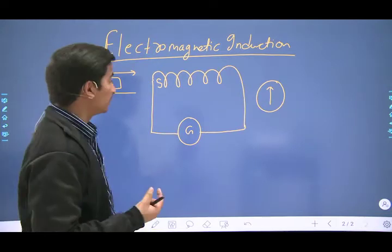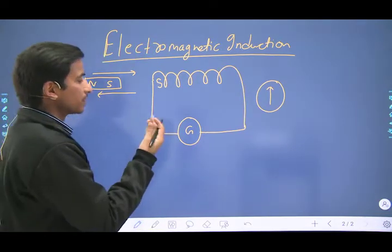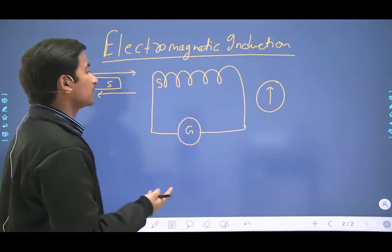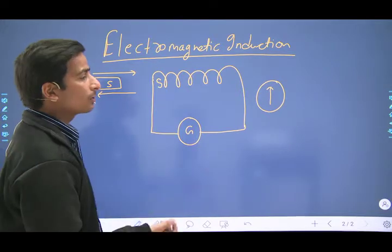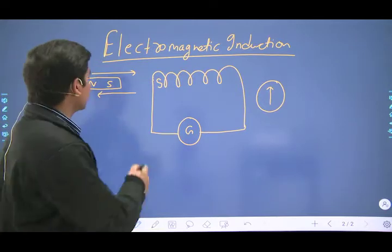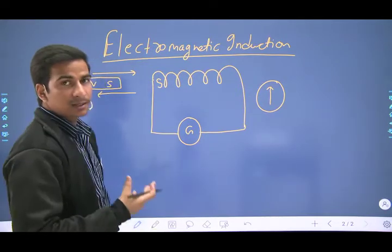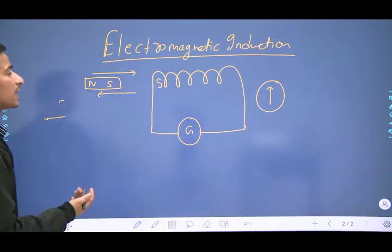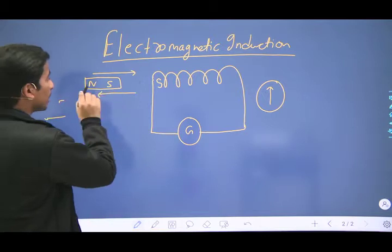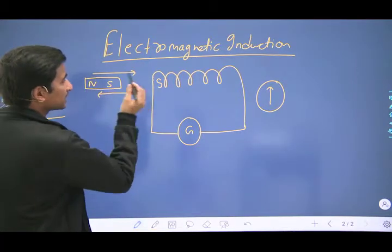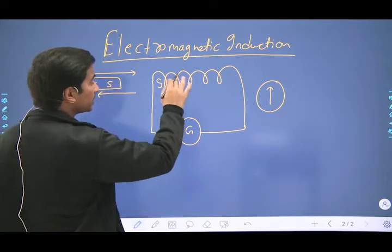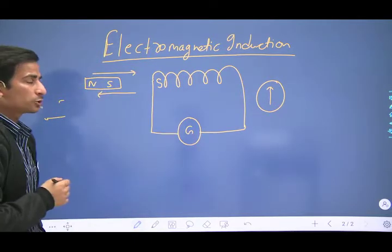That work is stored as potential energy or electrical energy inside the coil — exactly similar to dropping a stone from a height: gravity attracts it downward, but it cannot come up to a table without work done against gravity. Energy system ke andar tab store hoti hai jab hum kuch aisa karte hain jo system nahi chahata. Electrical energy ko yahan store karne ke liye zaruri hai ki hum south pole ko close laane par ye end south ban jaye, taaki is repulsion ke against hum kuch work kar sakein, aur wahi work electrical energy ki form mein store ho jata hai.